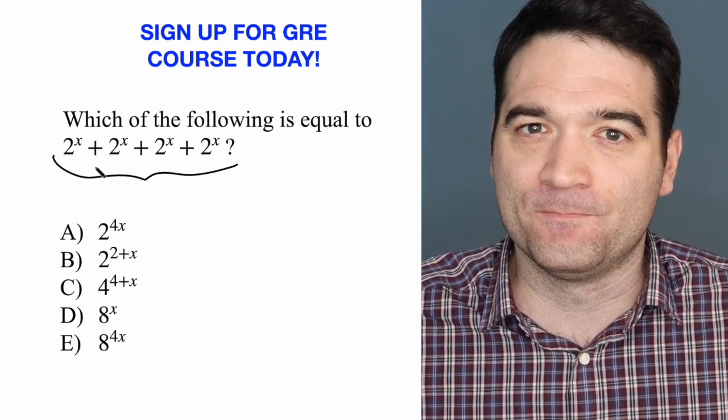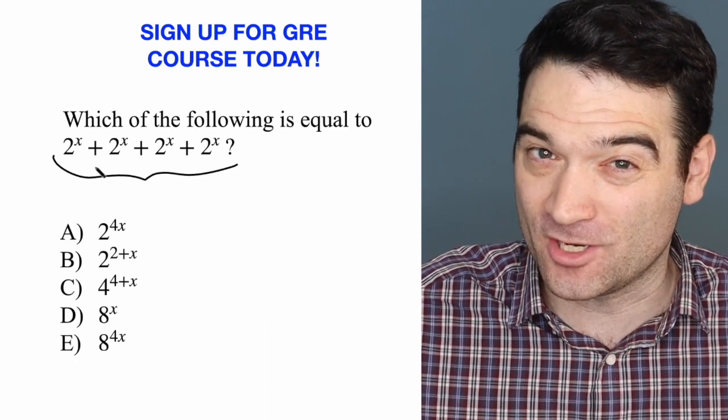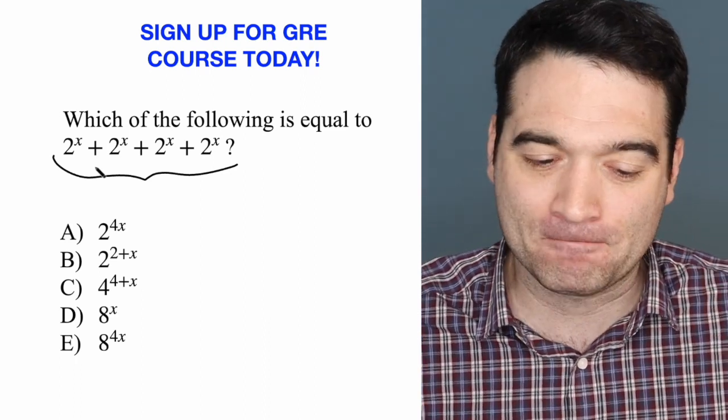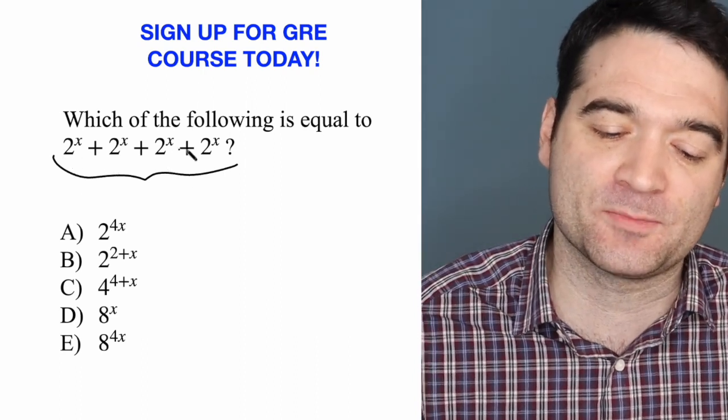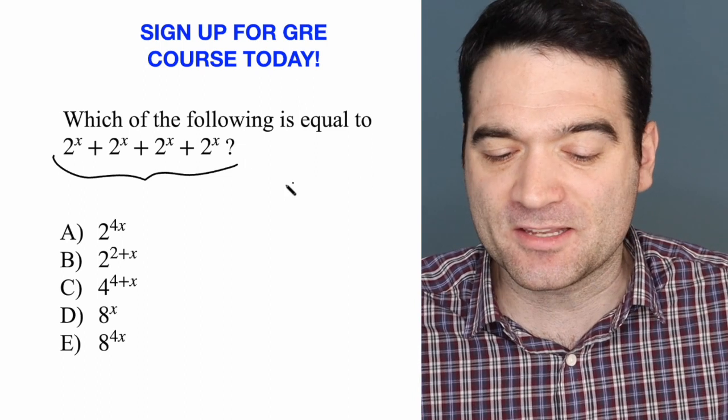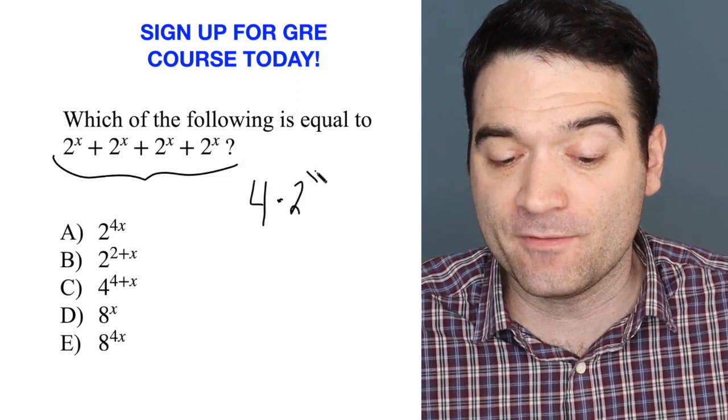What you have to do in this problem is rewrite it so that we have a multiplication. Let me show you what I mean by that. 2 to the power of x plus 2 to the power of x plus 2 to the power of x plus 2 to the power of x is the same thing as saying 4 times 2 to the power of x.